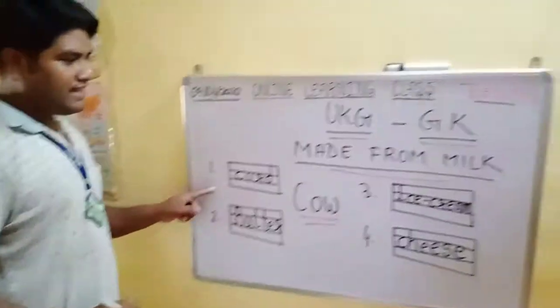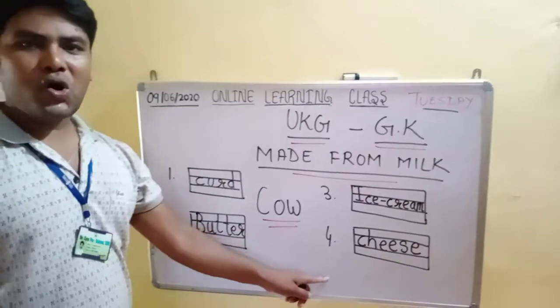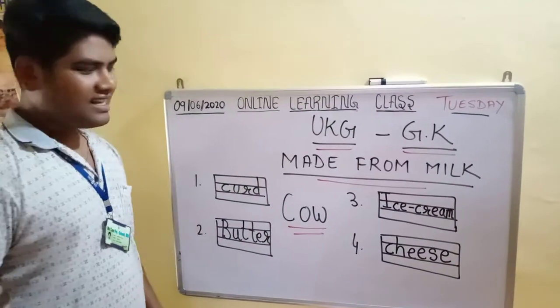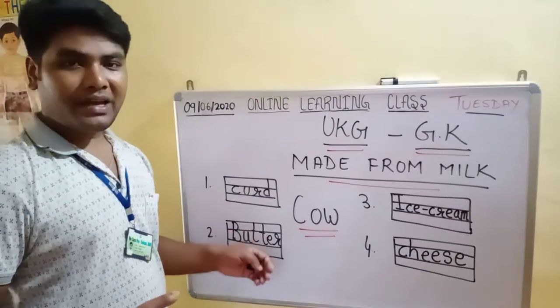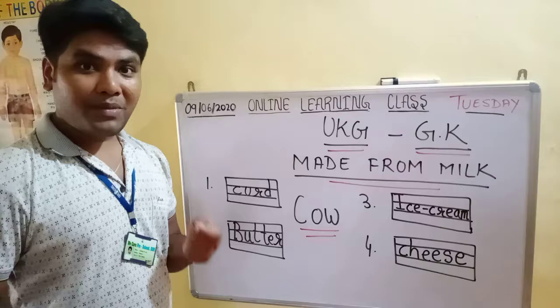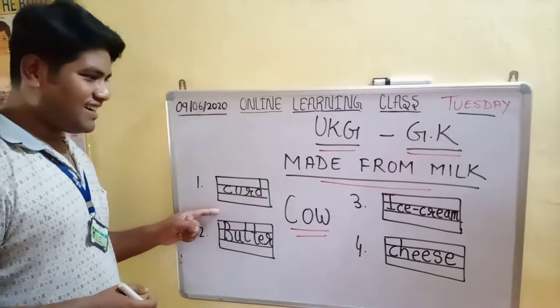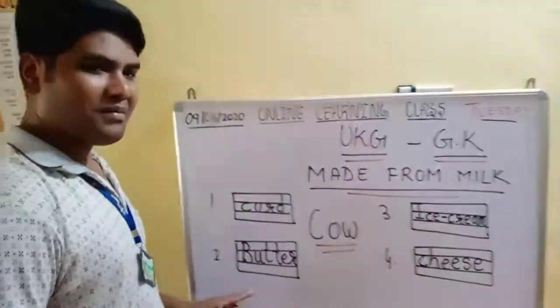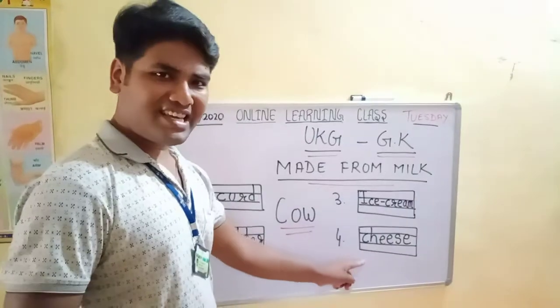These are the four milk products: C-U-R-D, curd; ice cream; butter; and cheese.